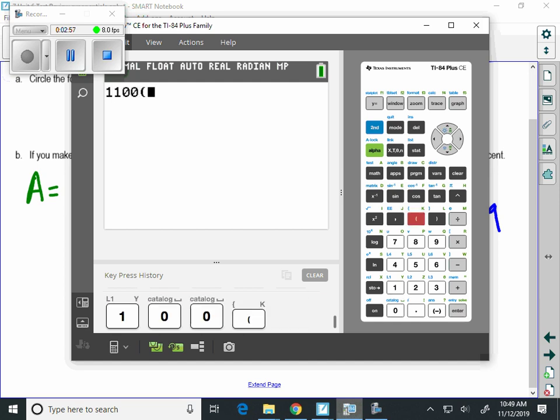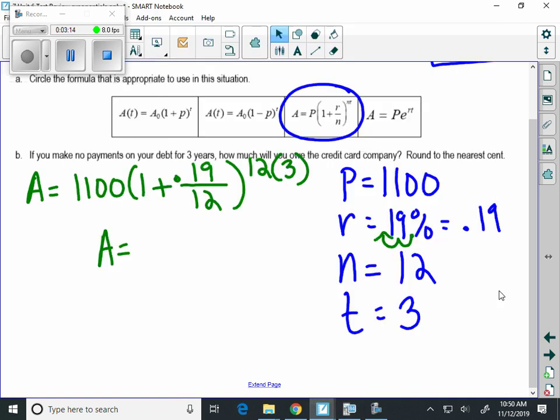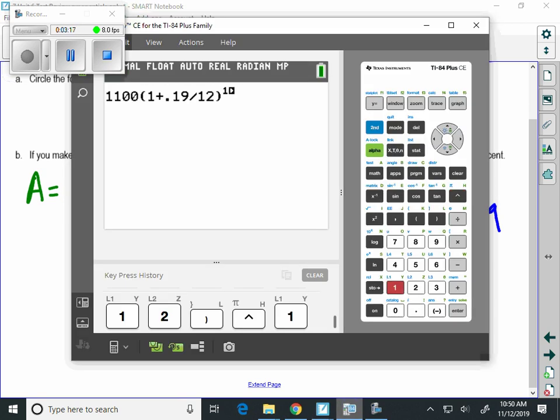1100 times 1 plus 0.19 divided by 12, close the parentheses, to the... remember, if you have an out-of-date calculator, you need to put parentheses in right now. Parentheses, but for the rest of us, we're going to put in 12 times 3.